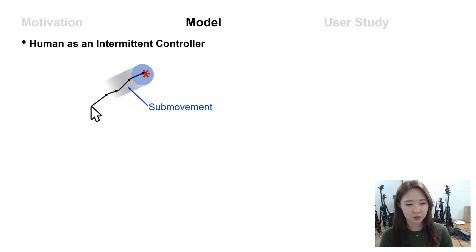And since the updated new motor plan replaces the former motor plan, the tracking path is fragmented with sub-movements. We call this intermittent control.